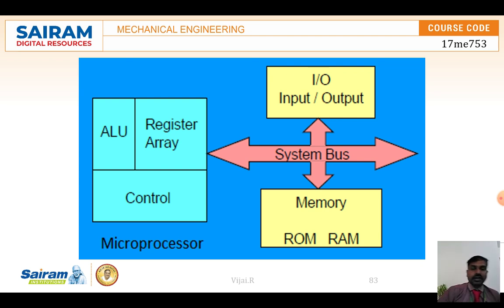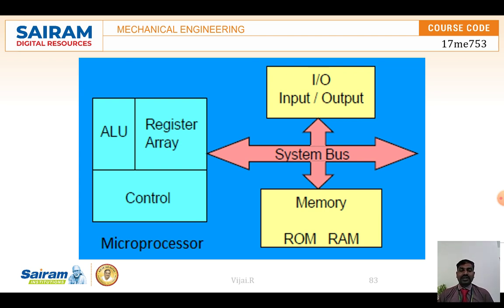Input and output devices include keyboards, joysticks, sensors, monitors, printers, and displays. The data processing — how information flows from input through the processor to output — happens through a set of wires we call a bus. Memory is where information gets stored.